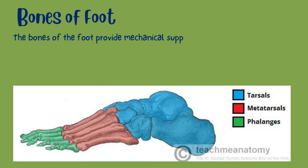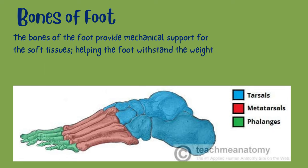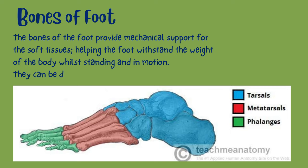Now we're going to study the bones of the foot. The bones of the foot provide mechanical support for the soft tissues, helping the foot withstand the weight of the body while standing and in motion. They can be divided into three groups: tarsals — a set of seven irregularly shaped bones situated proximally in the foot in the ankle area; and metatarsals — five bones that connect the phalanges to the tarsals, one for each digit.